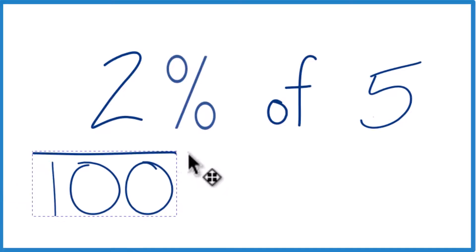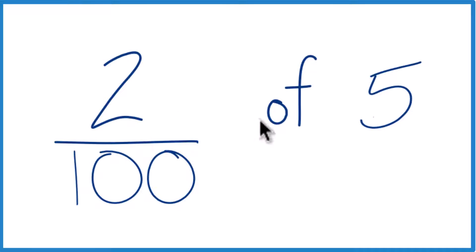So you could just call it 2 over 100, like that there. And the of, you could think of that as multiplication.